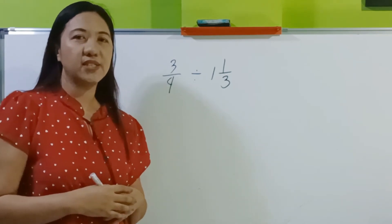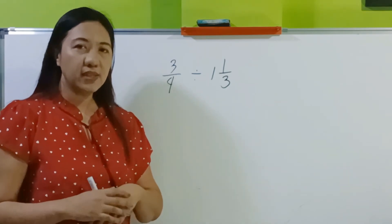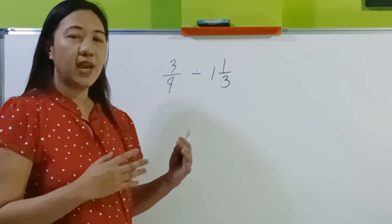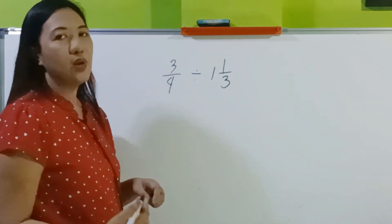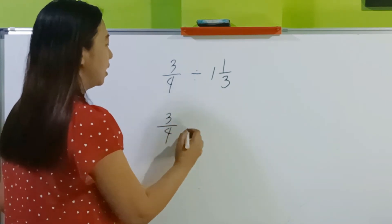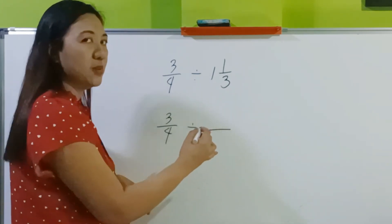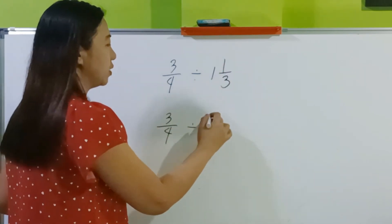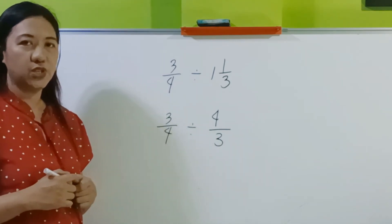Question: what if one number is a mixed number and the other is a proper fraction? If that happens, you only change the mixed number into its improper form, and the other one will be retained. Example: 3 fourths divided by 1 and 1 third. Just copy the 3 fourths, copy the division operation, and change 1 and 1 third into its improper form: 3 times 1 is 3, plus 1 is 4, so 4 thirds.